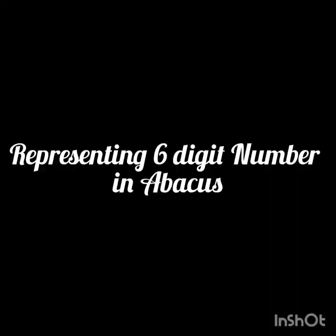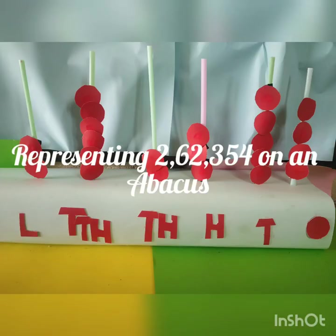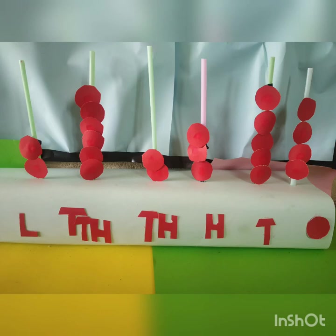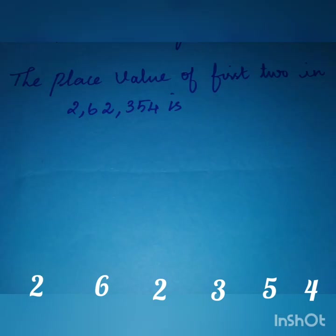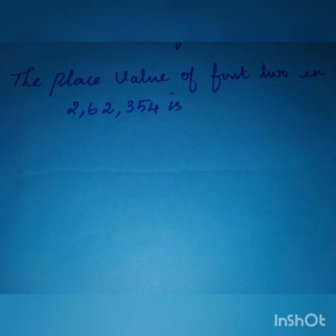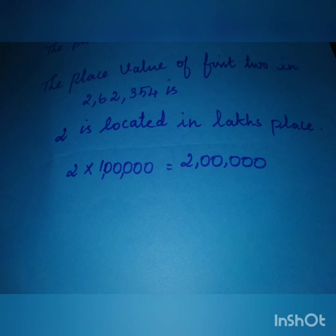Representing 2,62,354 on an Abacus. We align 4 beads in 1s column, 5 beads in 10s column, 3 beads in 100s column, 2 beads in 1000s column, 6 beads in 10,000s column, and 2 beads in the lakhs column. Let's find the place value of the first 2 in 2,62,354. 2 is located in the lakhs place, so 2 times 1,00,000 is 2,00,000. Therefore, the place value of the first 2 in 2,62,354 is 2,00,000.